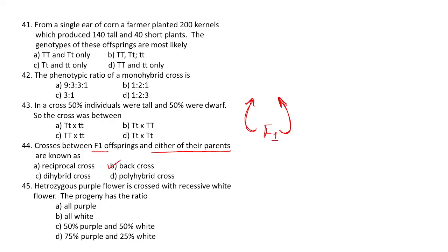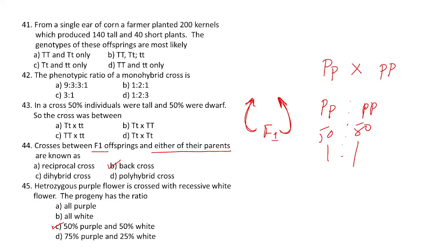Question 45: a heterozygous purple flower (capital Pp) is crossed with a recessive white flower (small pp). The progeny will have capital Pp and small pp in a 50:50 ratio — so 50 percent purple and 50 percent white.